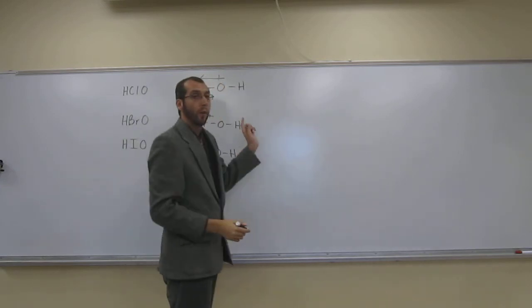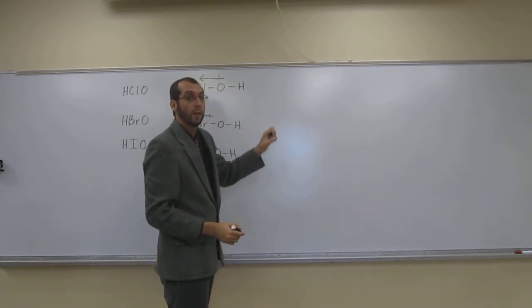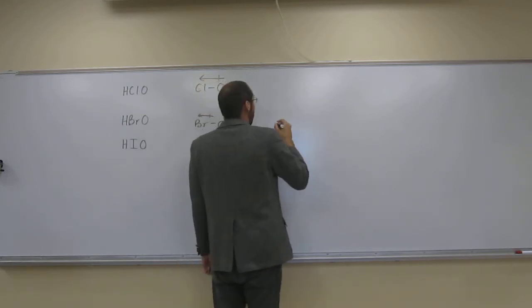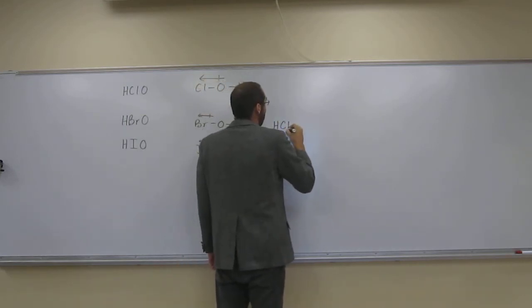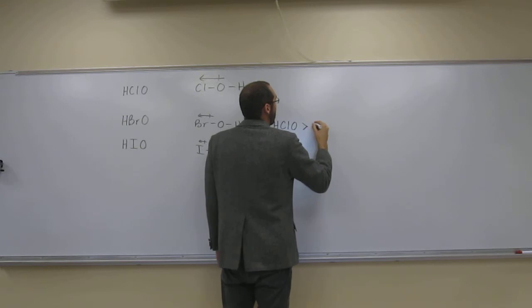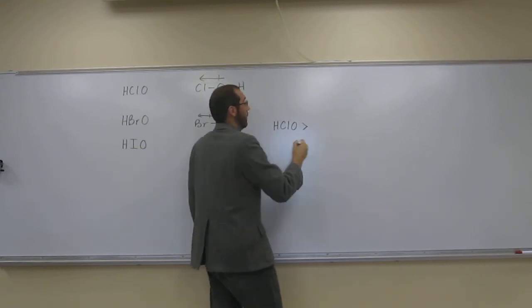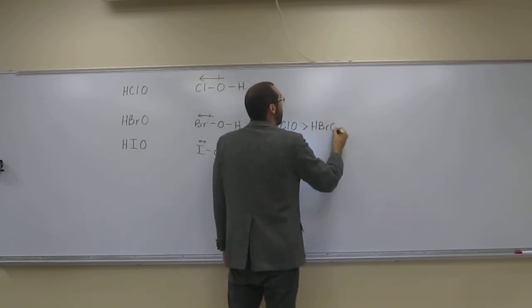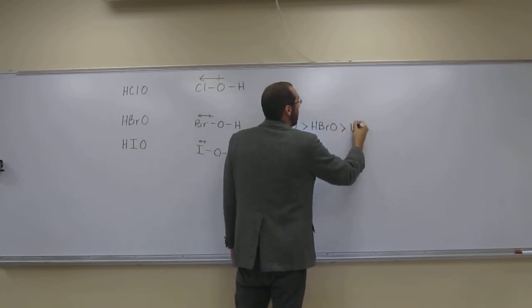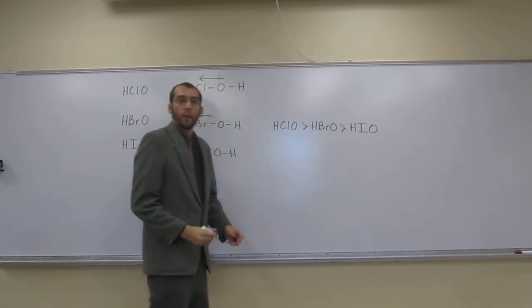So if we're going to rank these from most acidic to least acidic, we would rank them like this: HClO is more acidic than HBrO, which is more acidic than HIO.